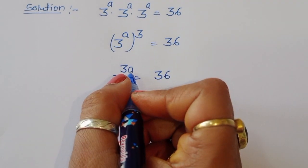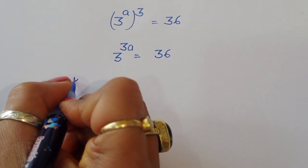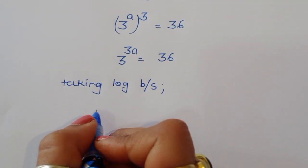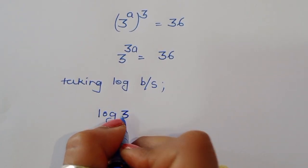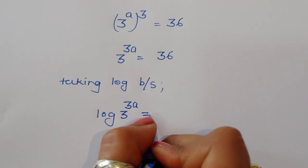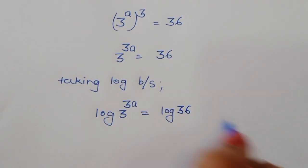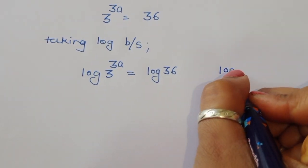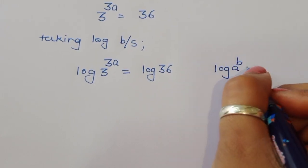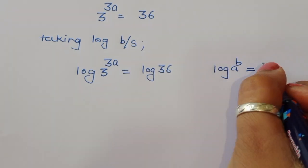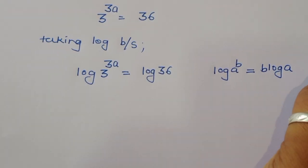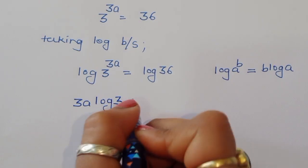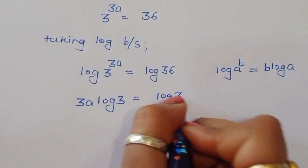Now we have to find out the value of A, so we can take log here. Taking log on both sides, we will get log of 3 power 3A is equal to log of 36. Now, using the formula log of A power B equals B times log A, the power comes down. So we get 3A times log of 3 is equal to log of 36.